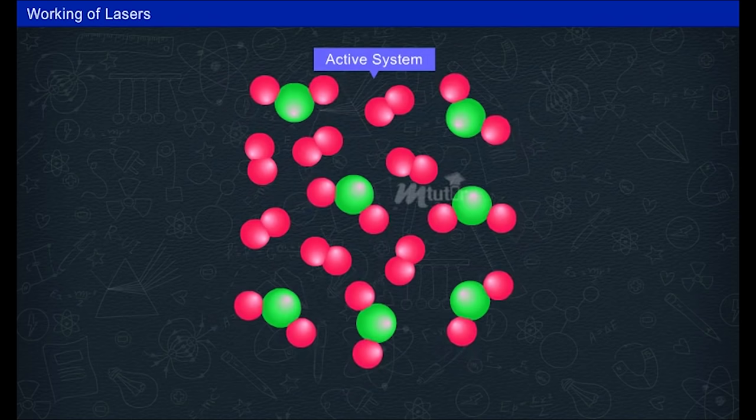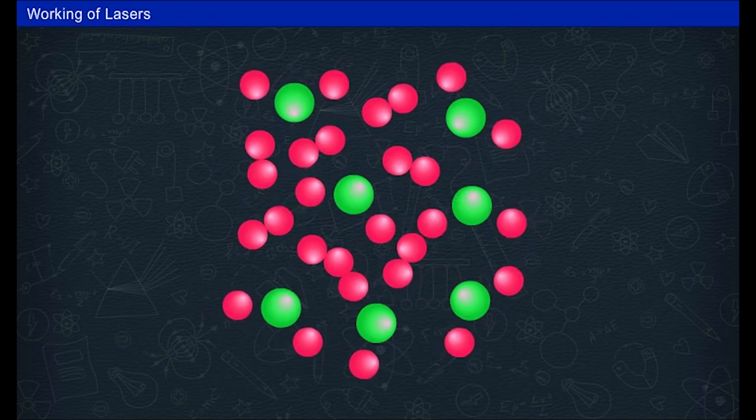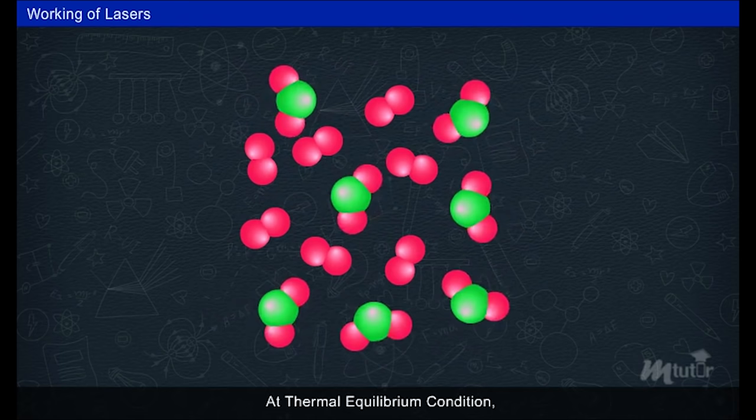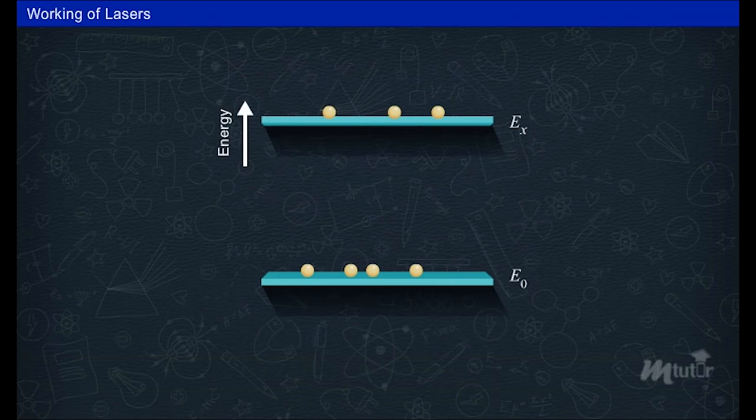Generally these active systems are compounds or mixtures of different elements. Consider the active system containing a large number of atoms in thermal equilibrium condition at a temperature T before the system is subjected to any radiation.